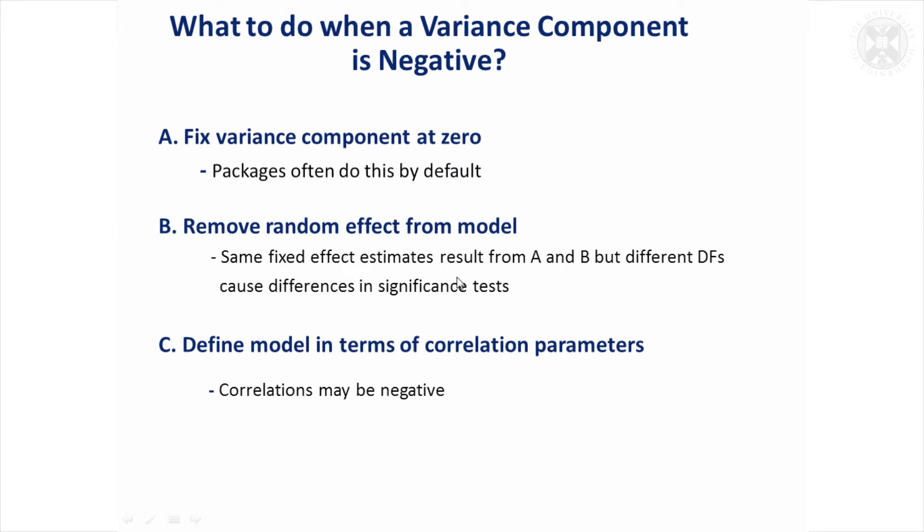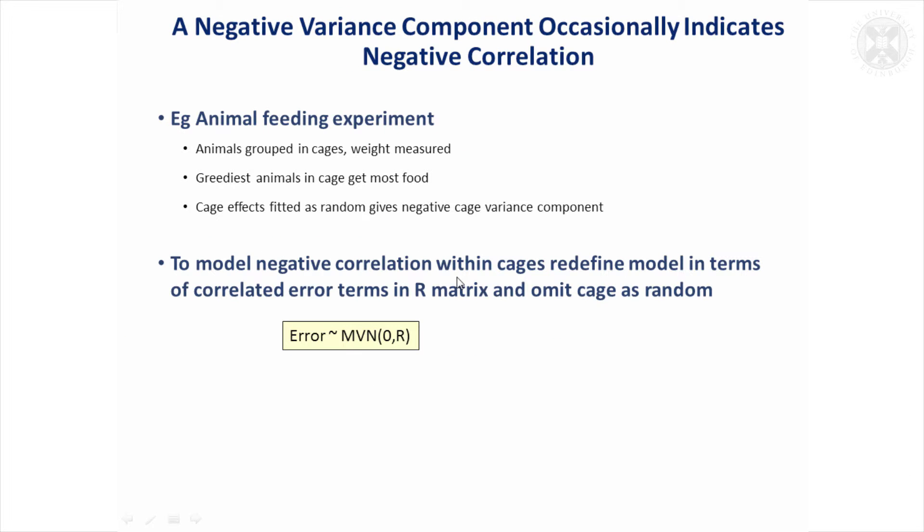Very occasionally a negative variance component is an indication of negative correlation within the random effects. When I worked in medicine, I never saw any examples of when that would be feasible at all, but perhaps you could imagine in an animal trial it might be a possibility if you, for example, were doing an animal experiment where you saw how much you're feeding animals.